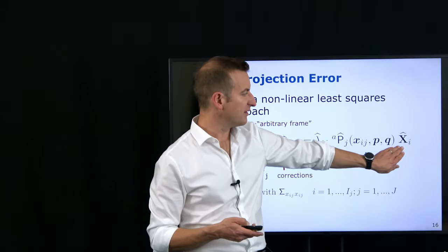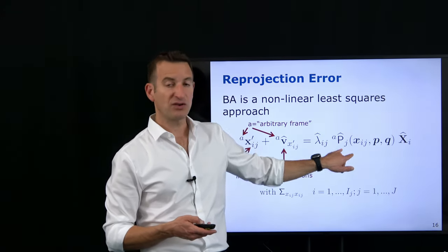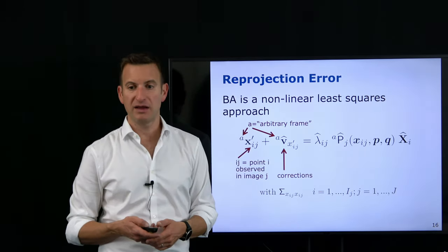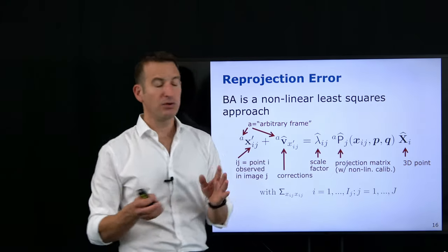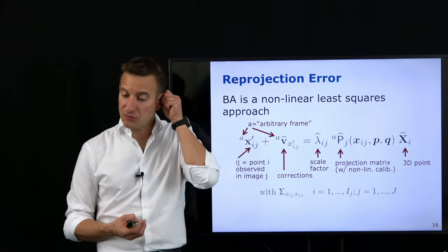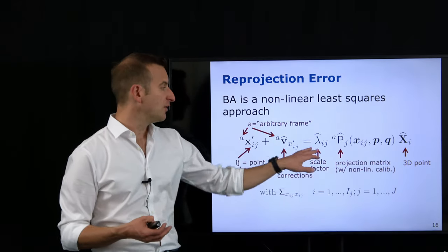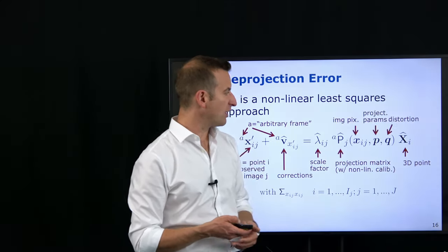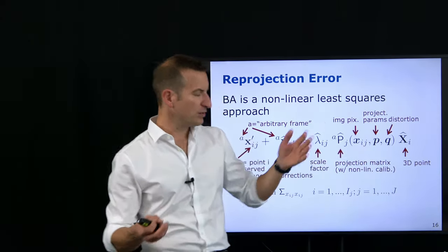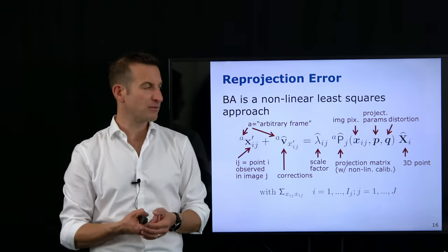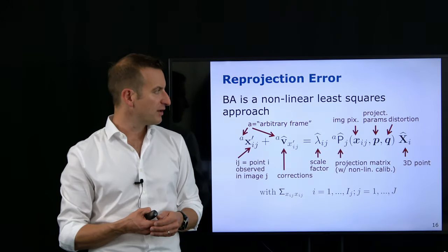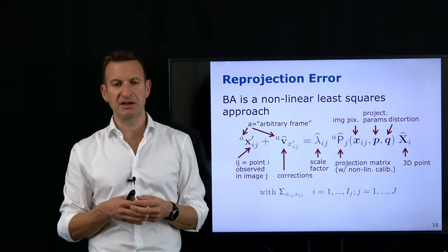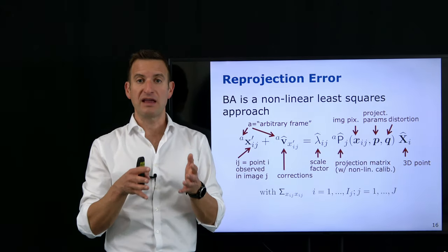The projection matrix has several parameters: the projection parameters as known from the direct linear transform, the affine camera model, plus nonlinear distortion parameters — my potentially nonlinear calibration parameters. In this P we have all the intrinsic parameters of my camera — typically five intrinsics plus potentially additional unknown parameters such as barrel distortion coefficients. We also have uncertainties in the image coordinates: how precisely can I actually measure a feature point? For example, if SIFT features can be localized to a third of a pixel, that would be the uncertainty I assign, including potential correlations.